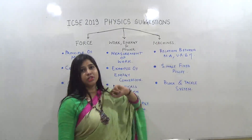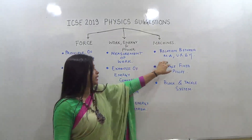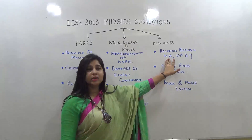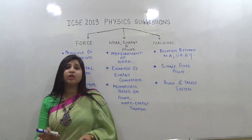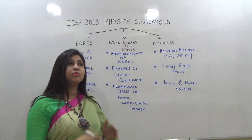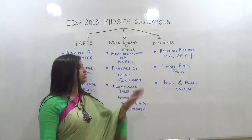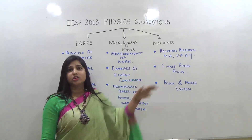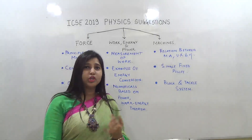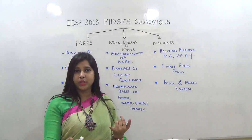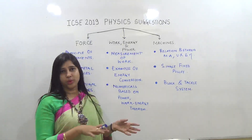Our next topic is machines. The first very important topic is the relationship between mechanical advantage, velocity ratio, and efficiency — a very common question in ICSC. If you have done your last 10 years, you will have seen this question appear repeatedly. You need to derive the relationship between them, and there can also be a numerical based on this.